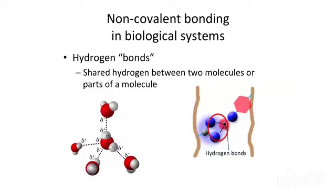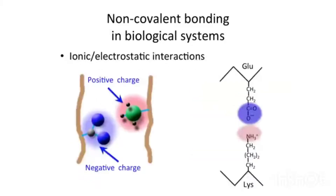A second type is ionic or electrostatic interactions. Positive attracts negative — we're all familiar with that. You can see this in two amino acids, glutamate and lysine. Glutamate is negatively charged, and lysine is positively charged — it has an amino group. So positive attracts negative, giving you these ionic or electrostatic interactions.